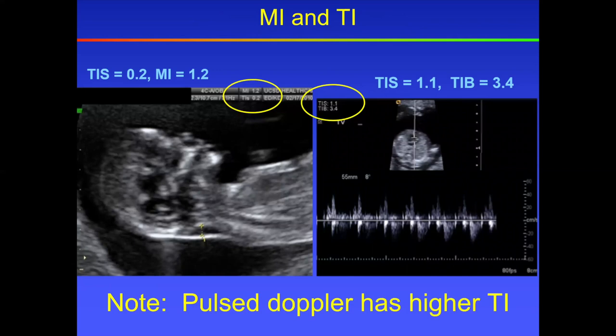You'll find those parameters on your ultrasound viewing window — MI here for mechanical index, TI for thermal index. Note that thermal index will increase with pulse Doppler, so limit the use of pulse Doppler. Of course, it's okay to use it when necessary, but I would not leave it on for a long period of time for no reason.